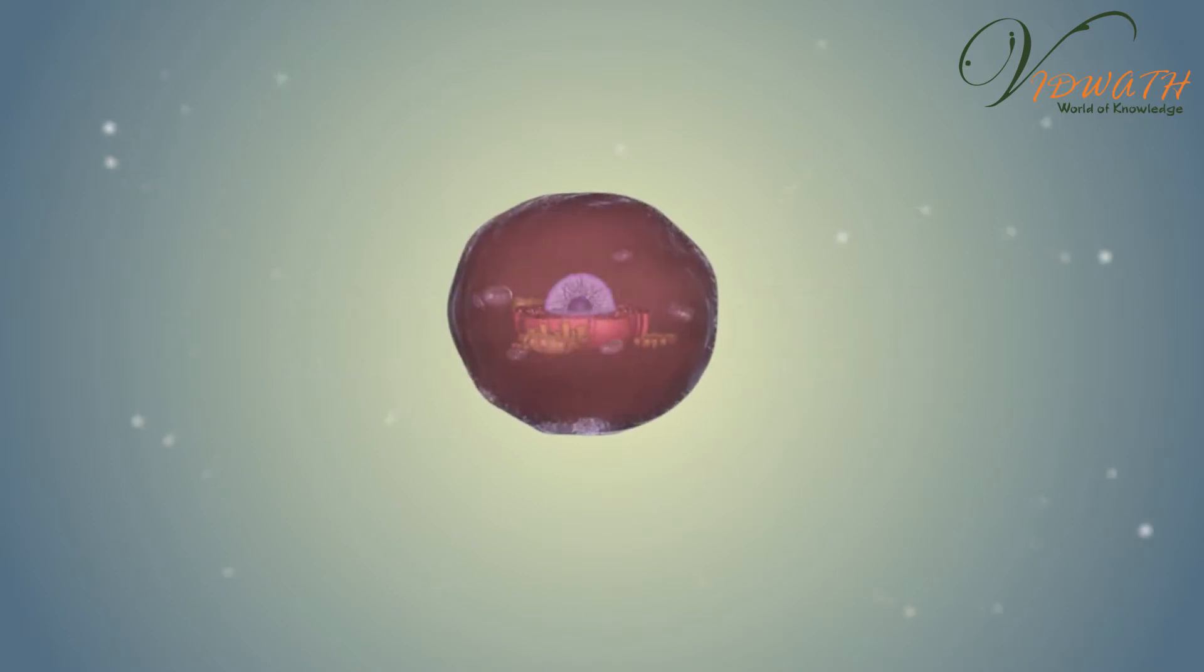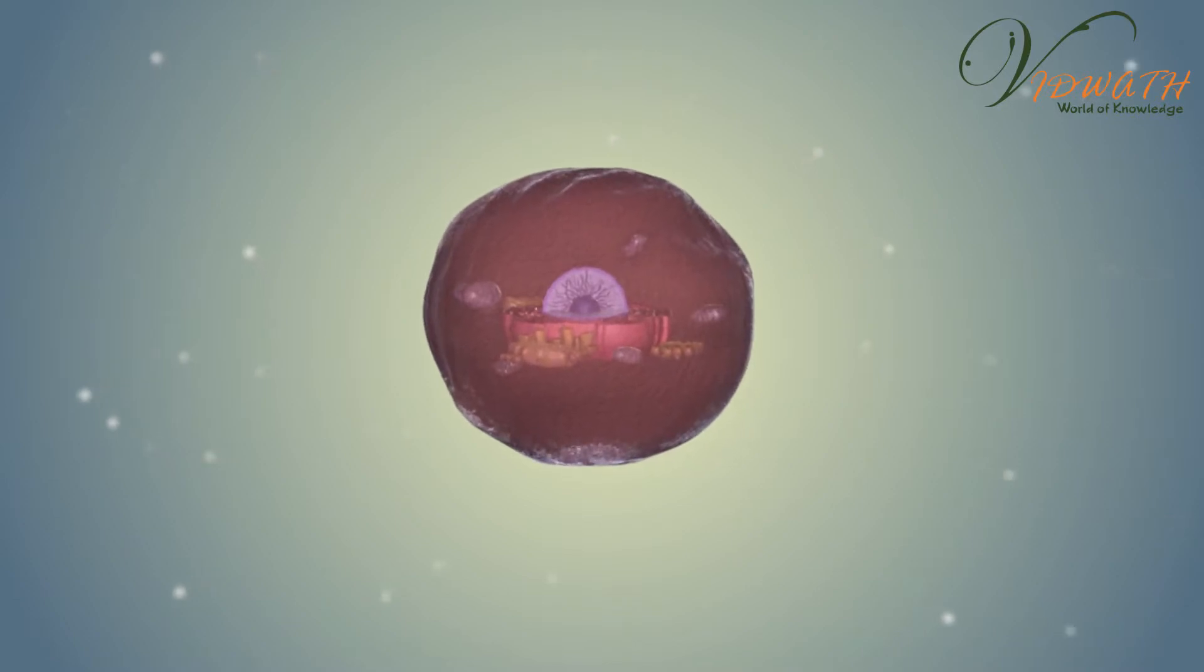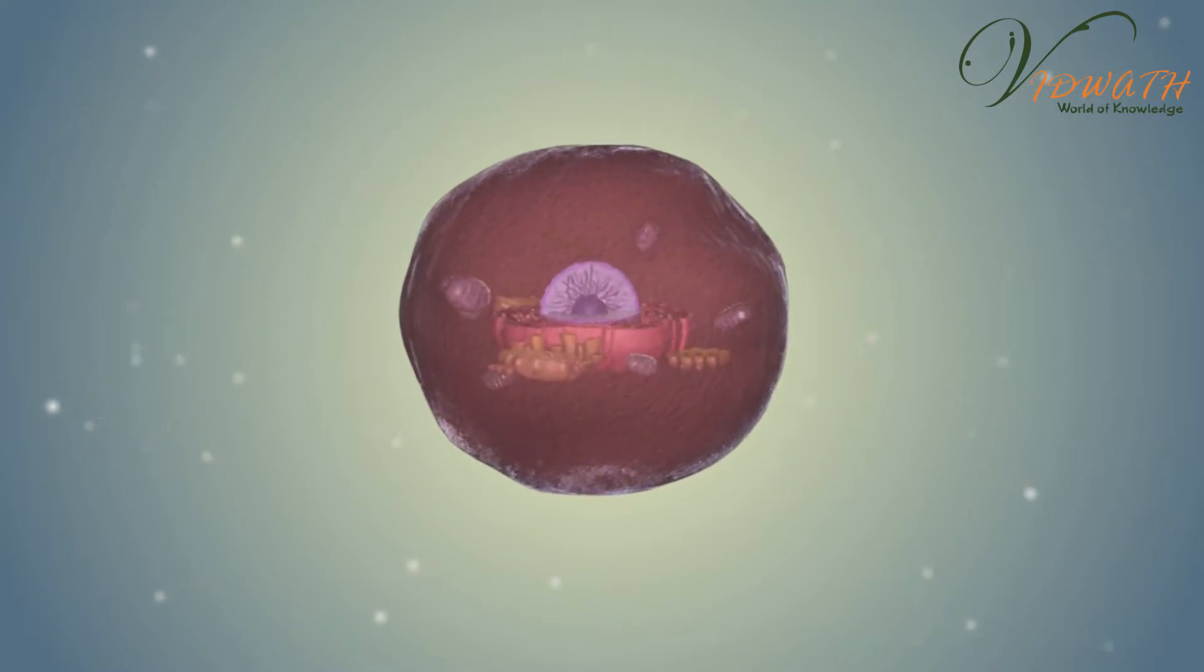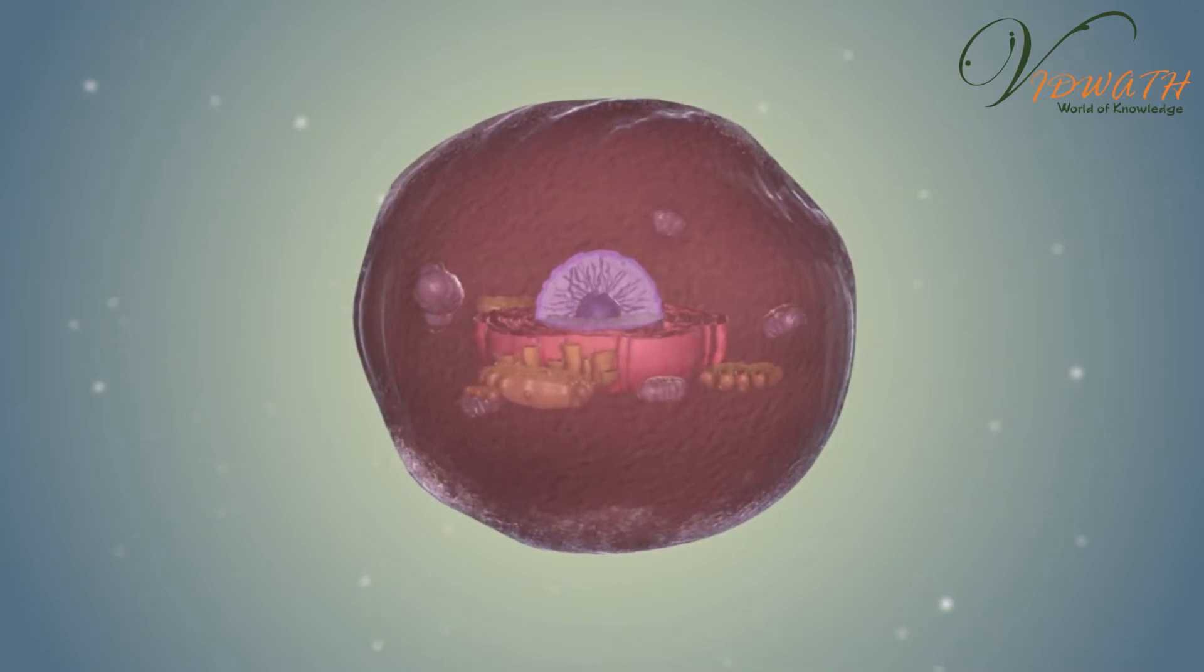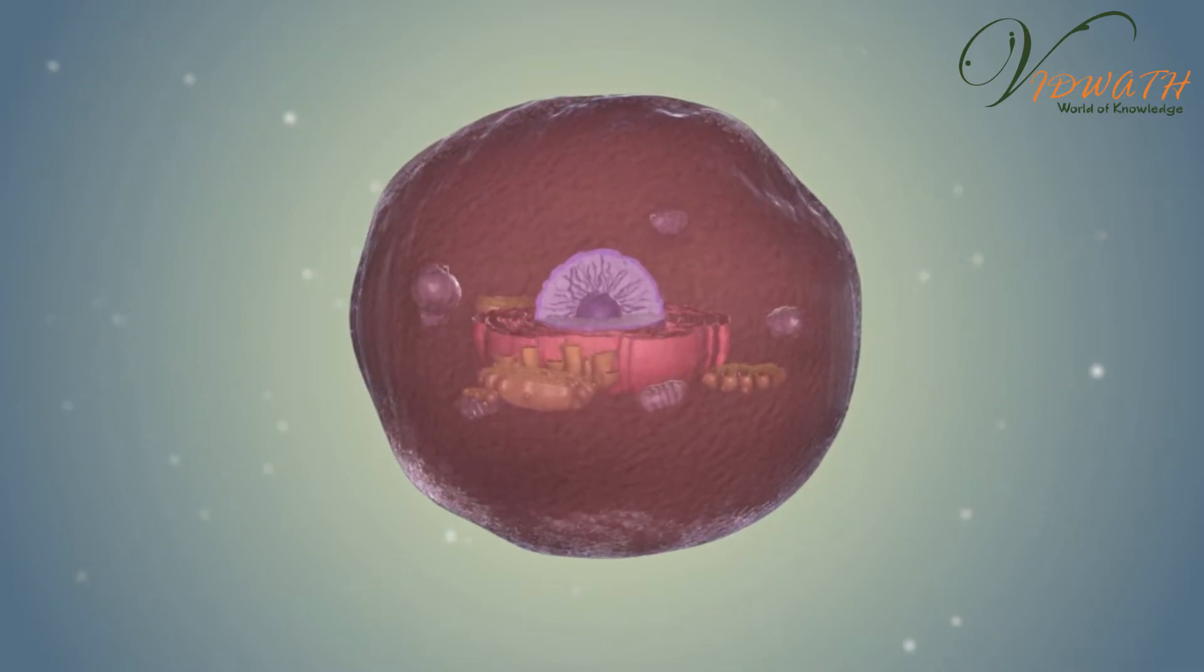An animal cell is a type of cell that dominates most of the tissue cells in animals. Animal cells are different from plant cells because they don't have cell walls and chloroplasts, which are relevant to plant cells.